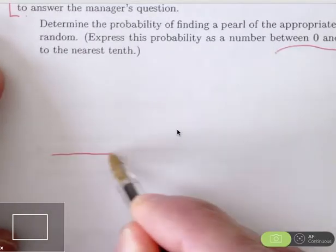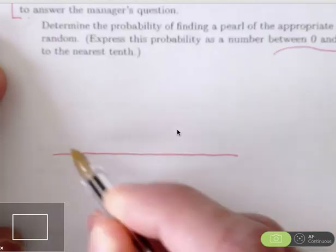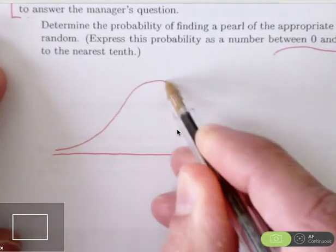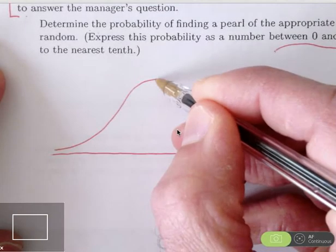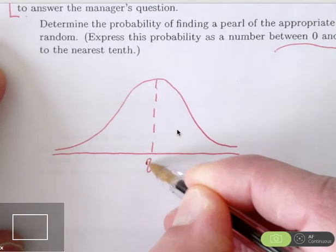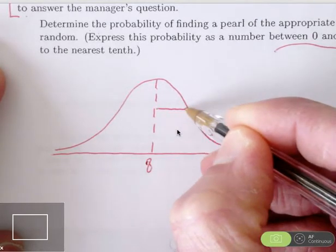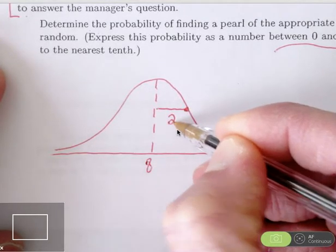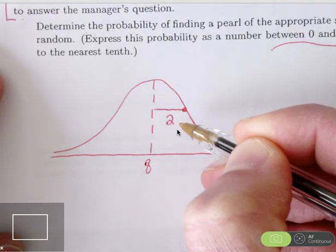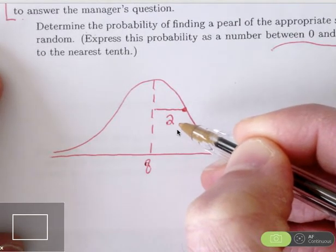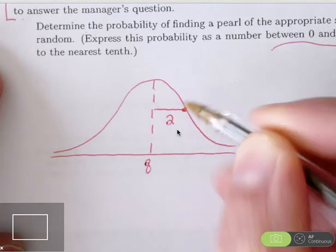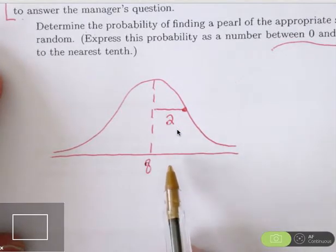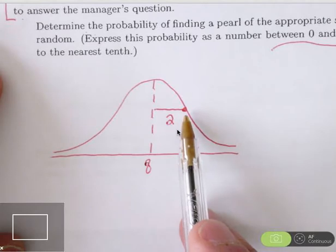Let's draw a picture of a normal distribution. Our normal distribution has a mean of 8 millimeters. It has a standard deviation of 2 millimeters. I am interested in the percent of the time, if I randomly choose one oyster, that the pearl in it will be between 7 and 9 millimeters. Here is 8 millimeters.